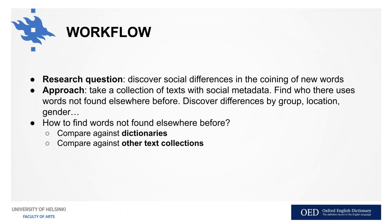Now the workflow for discovering new words. The research question is social differences in the coining and use of new words. The approach is that we take a collection of texts with social metadata — we know who the writers are and their social background — and then we try to find who uses words that are not found elsewhere before. We try to discover differences by social status, region, gender, and so on. We can compare the words against dictionaries like the OED or other text collections.